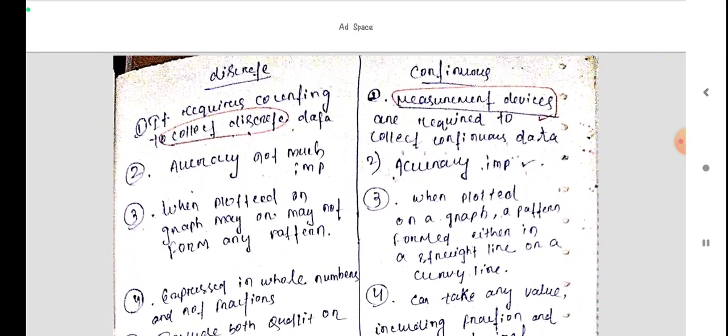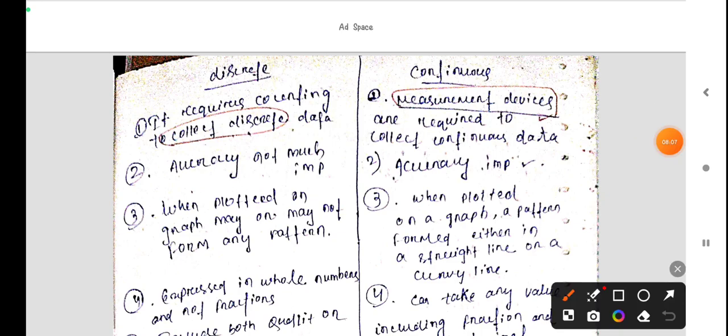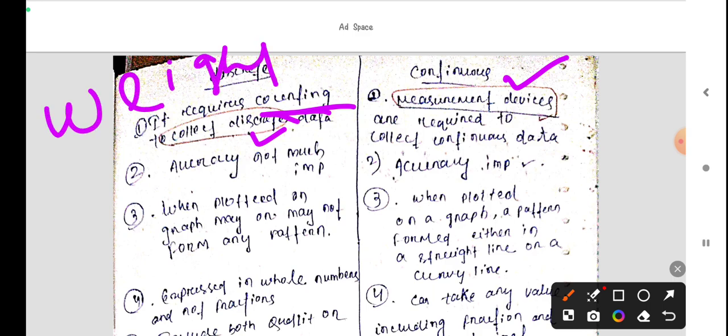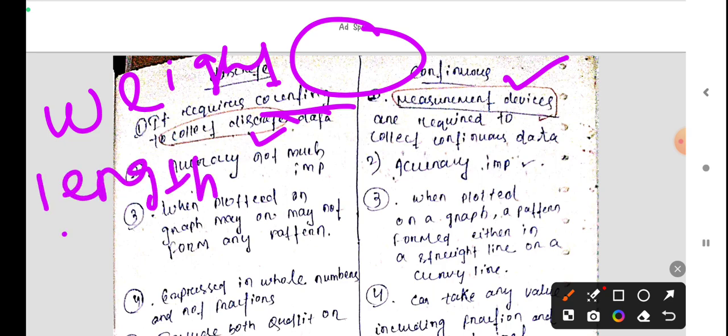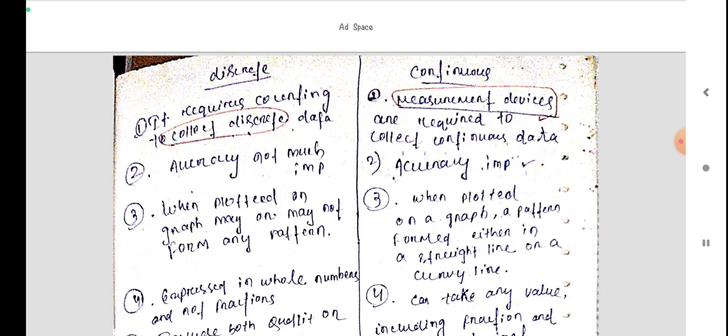When plotted on the graph, accuracy is not much important in discrete series. It requires counting to collect discrete data. In continuous series, it requires measurement devices to collect continuous data. Like if we are measuring weight, we need a weighing scale. Or if we need length, we use that. Measurement devices are needed.